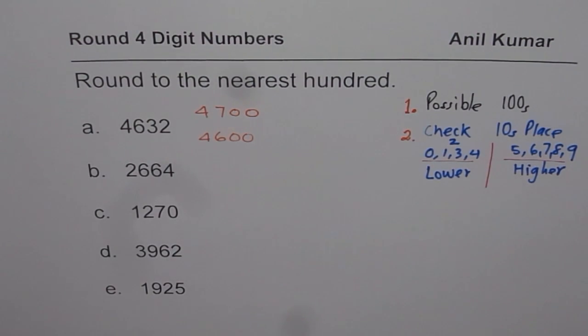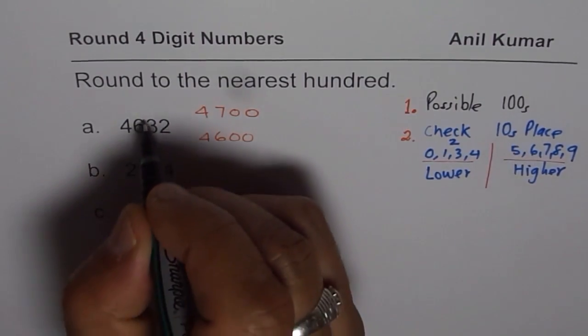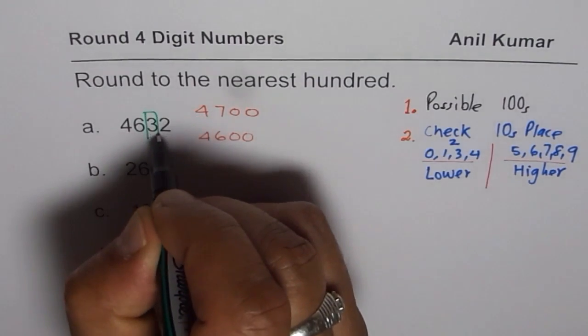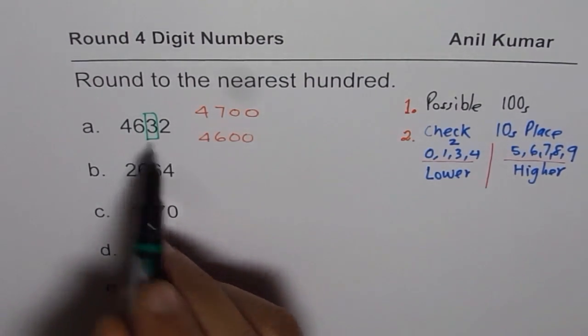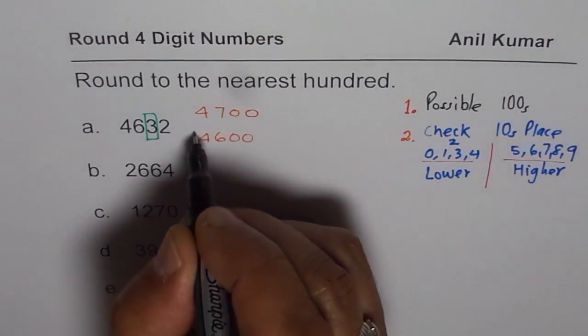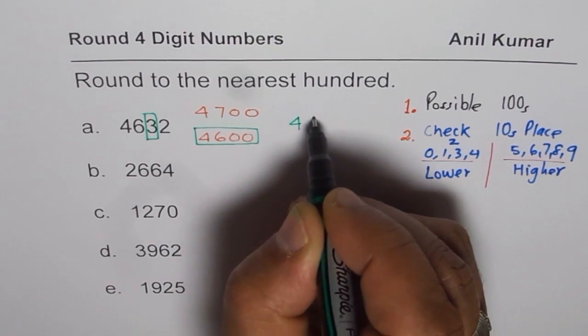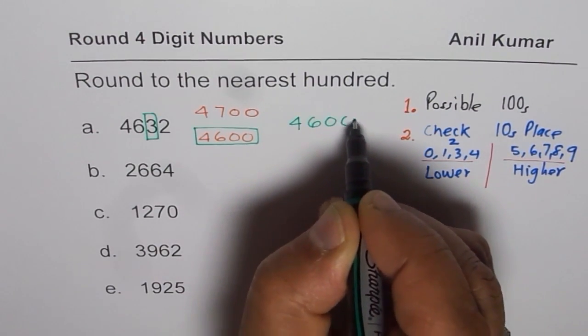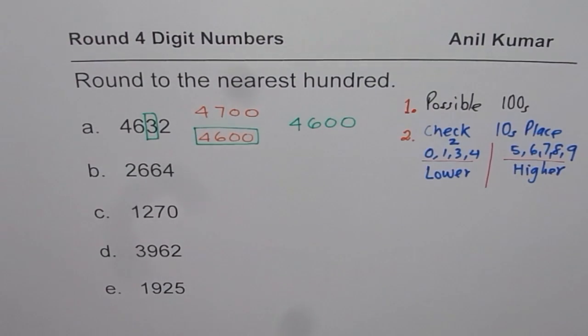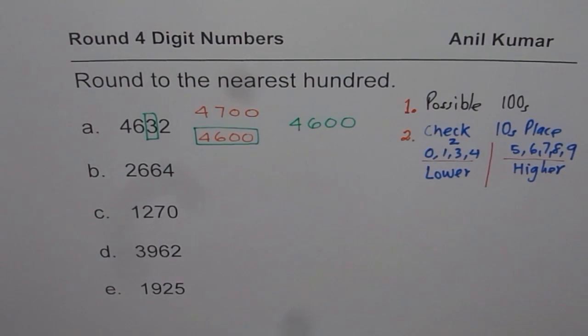So in our case, let us make the selection. In tens place, the number is 3. This is tens place for us. Now, 3 is lower than 5, and therefore the correct answer will be the lower option. So we will round it to 4,600. These are the two steps. If you follow them, then you will always get the correct answer. Let us do the next one.